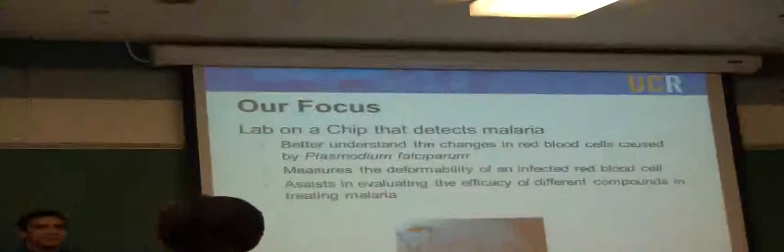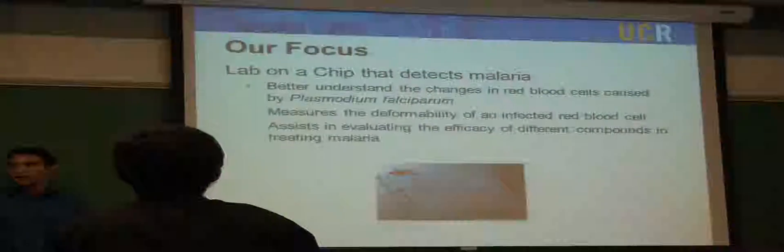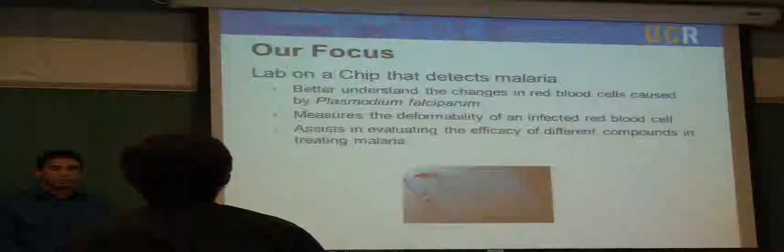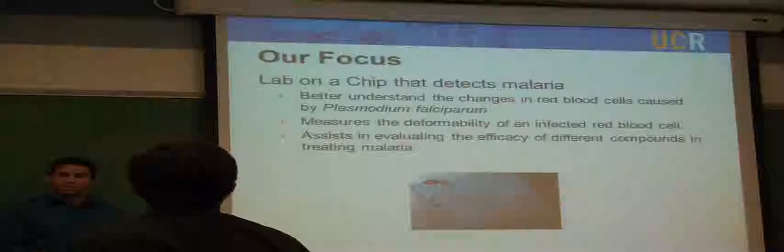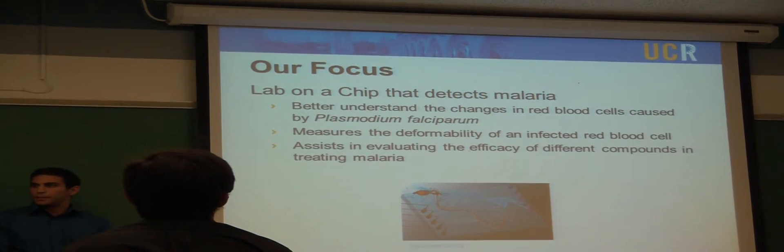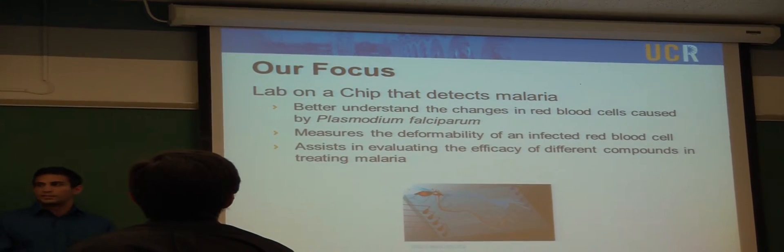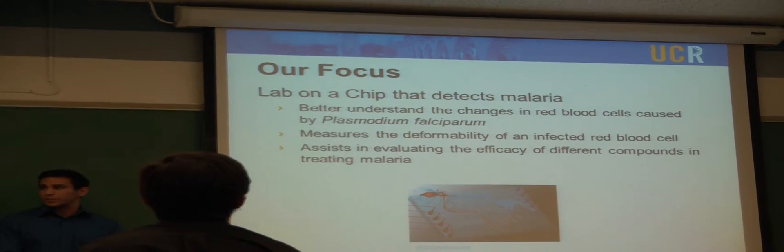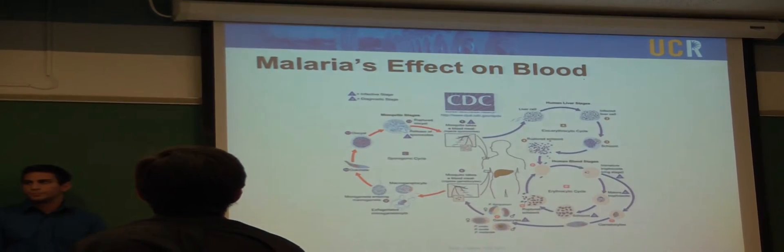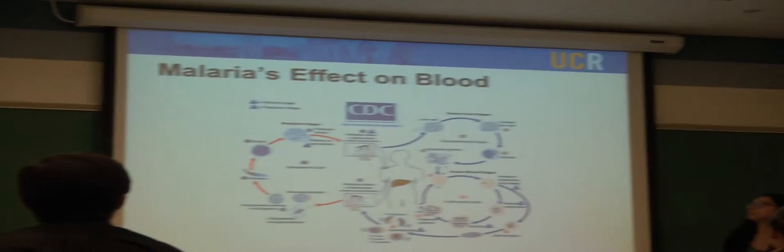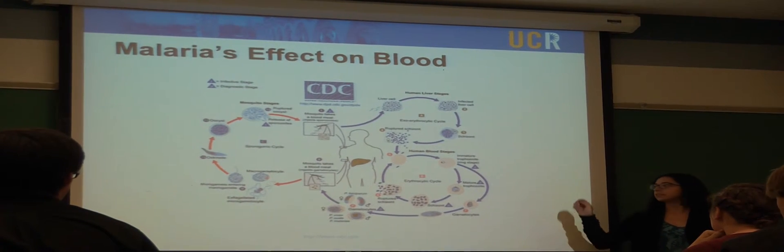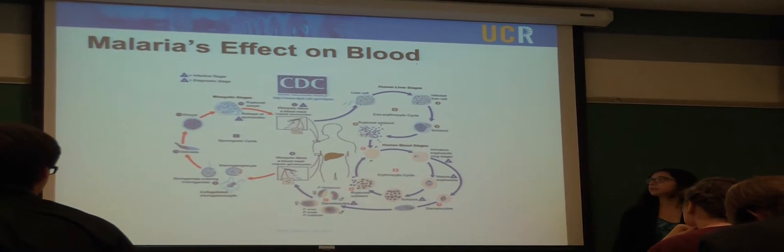Our focus is lab on a chip that detects malaria. It better understands the deformities caused by plasmodium parasite, which is the parasite that causes malaria, by measuring the deformability of an infected blood cell. It also assists in evaluating the efficacy of different compounds in treating malaria. Since lab on a chip uses blood to detect malaria, it's important to understand the life cycle of the parasite.